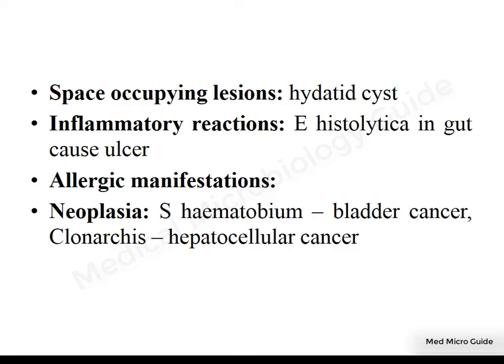Some parasitic infections are associated with elevated eosinophil count leading to allergic manifestations. Parasites like Schistosoma haematobium can cause bladder cancer, whereas Clonorchis sinensis can cause hepatocellular cancer. All these points mentioned in these two slides are usually viva questions, and students should be able to answer these.